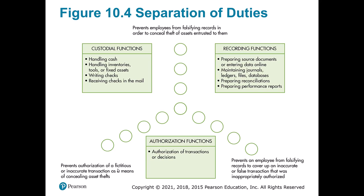Separation of duties uses the ARC framework: Authorization, Recording, and Custodial — three roles you want to split up. Custodial is the easiest to understand: these are the people who actually have the assets, like a clerk who handles cash in a register or safe. You want to split that from recording. At a grocery store checkout, even though the person at the till has the cash, transactions are recorded through the point-of-sale terminal separately, making it harder to manipulate. Recording can include source documents, journals, and reconciliations.